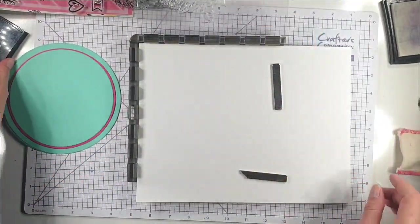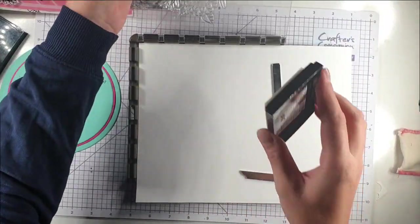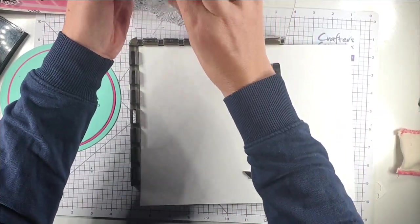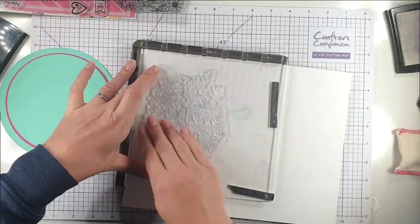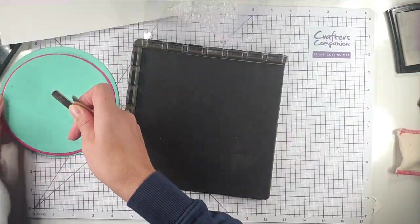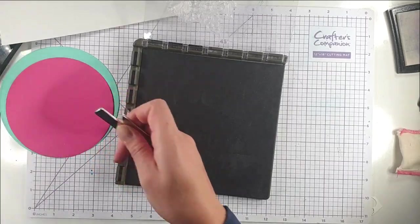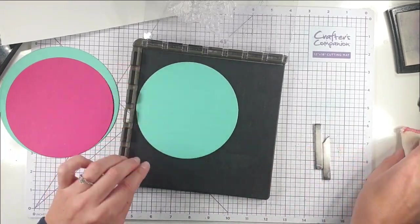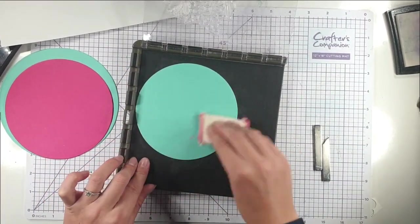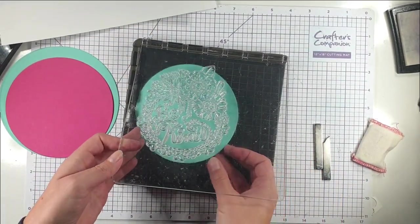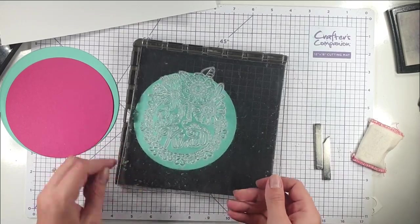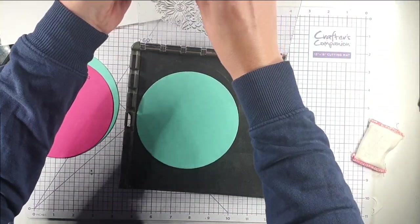I'm just going to repeat that one more time to make sure we've got a really good impression. Then I'm going to do that again on this smaller circle. I'm just making sure it's in the right place before I put it down, so I'm inking that up again.